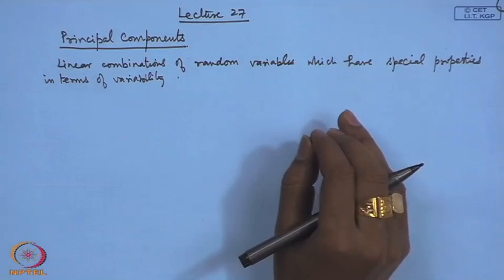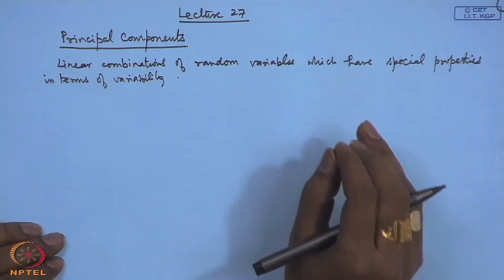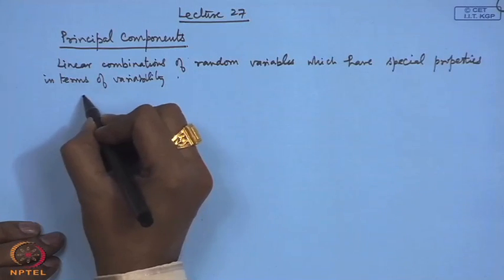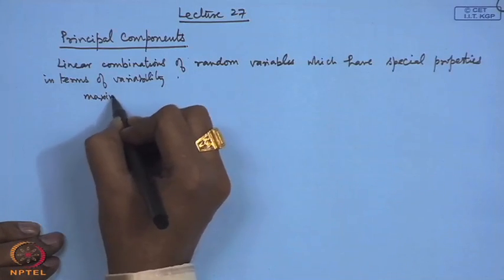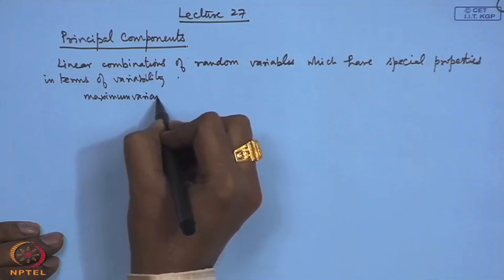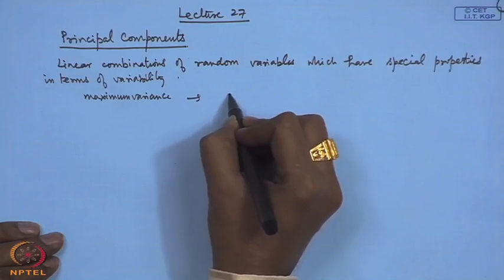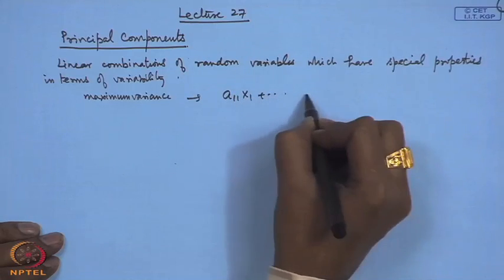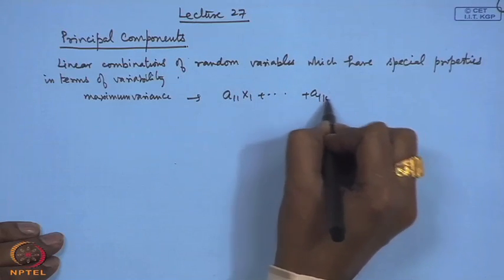For example, the first principal component is the normalized linear combination which will have maximum variance. We can order them: the one having maximum variance is the first, corresponding to the linear combination a₁₁x₁ + ... + a₁ₖxₖ, whose variance is maximum.